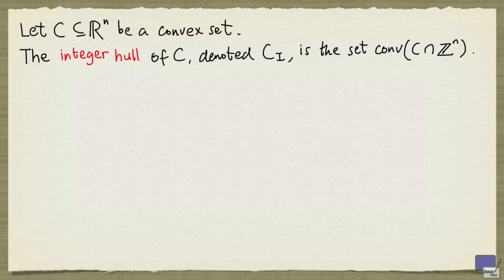Let C be a convex set in R^n. The integer hull of C, denoted C_i, is the convex hull of all the integral points in C.